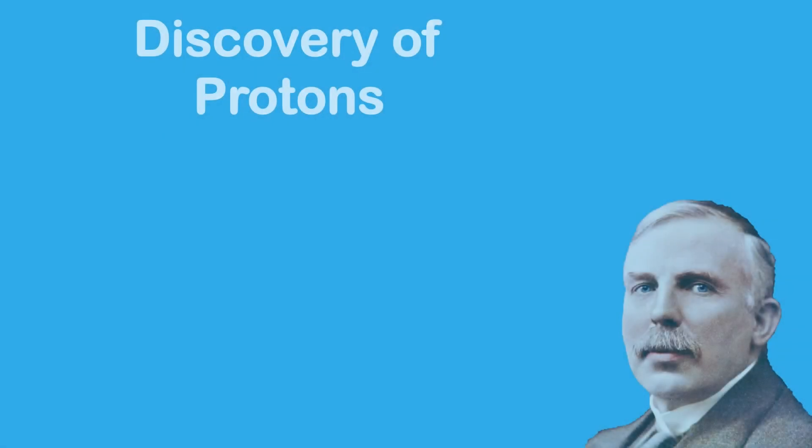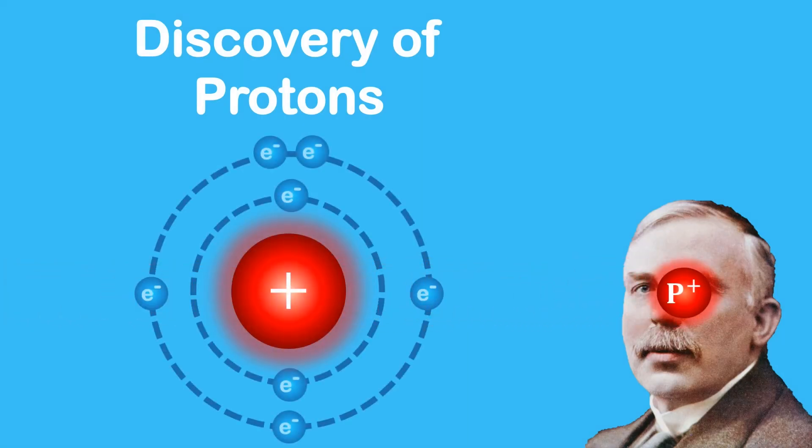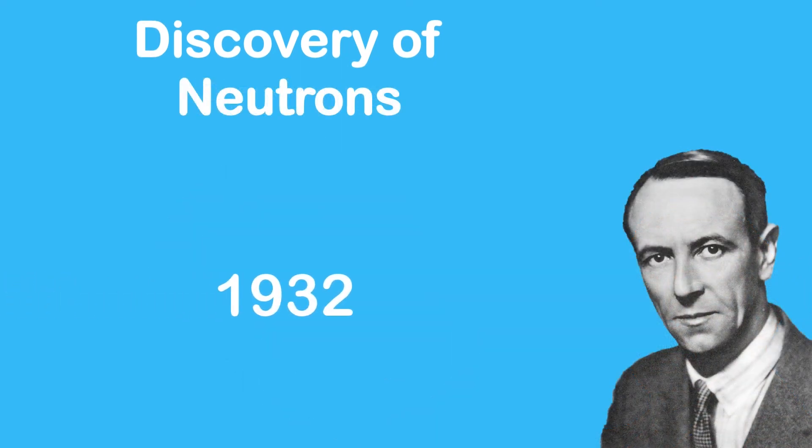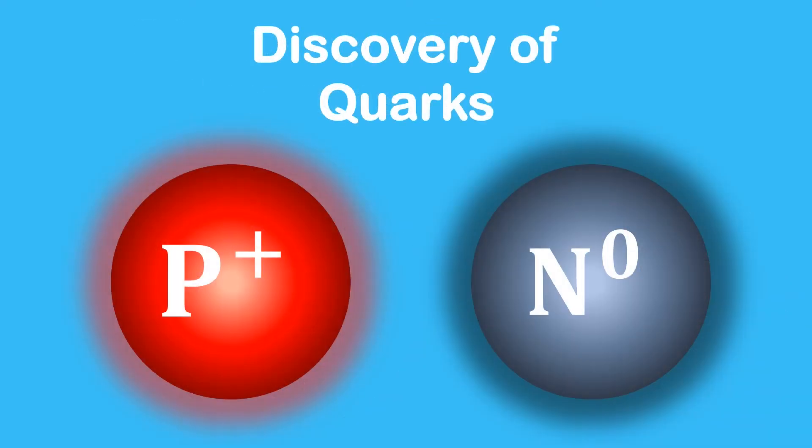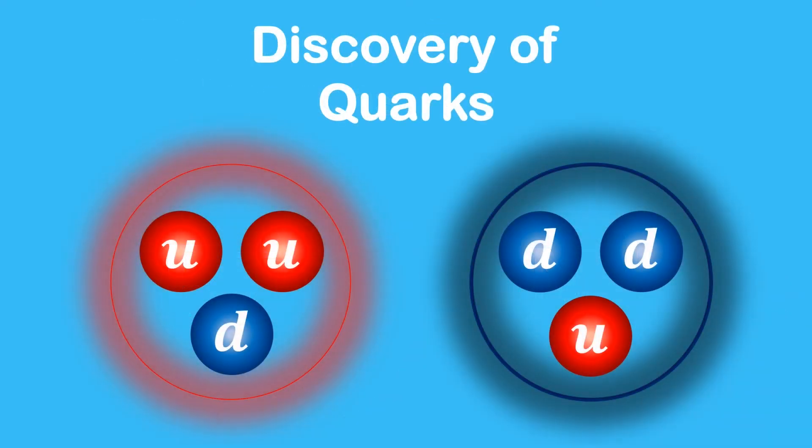But since the Bohr model, small adjustments have been made. In 1917, Rutherford discovered that the nucleus was made of protons. In 1932, James Chadwick discovered that it also contained neutrons. And in the 1960s, it was also discovered that neutrons and protons are actually made of even smaller particles called quarks.